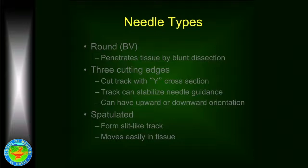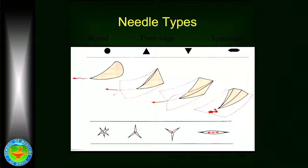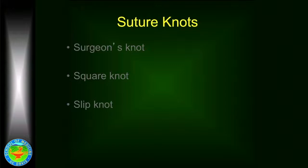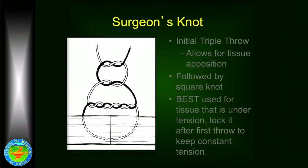There are a variety of needle types that one can use in repairing corneal wounds. There are round needles generally called BV because they're used in blood vessels, needles with cutting edges, and spatulated needles which are flat. Generally the spatulated needles are the best for corneal repair. There are different types of knots: the surgeon's knot is the typical three-one-one configuration, best used for wounds that are under tension to separate, because the first three throws lock the tissue together and give you stability.